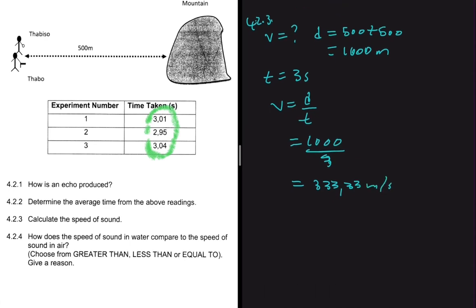4.2.4: How does the speed of sound in water compare to the speed of sound in air? It is greater than the speed in air, because water is more dense compared to air.